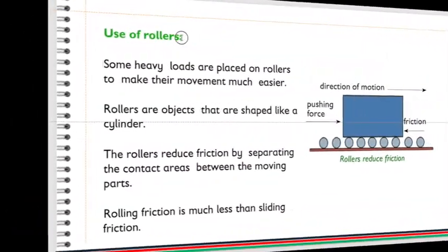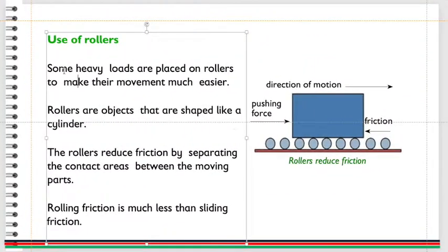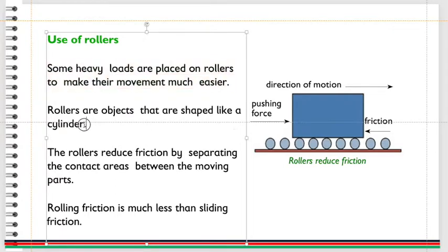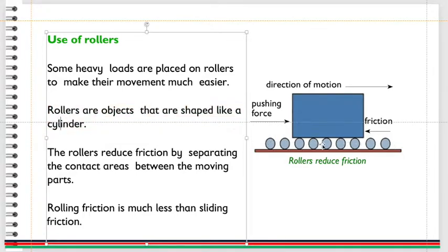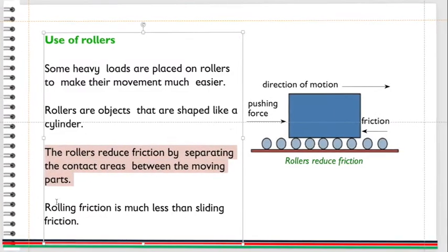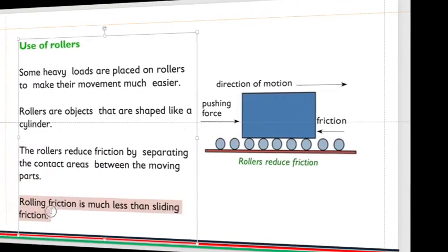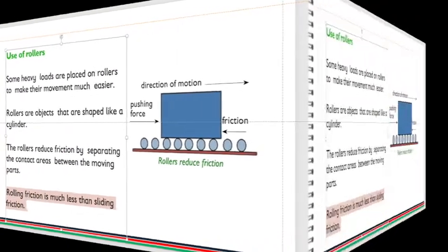Use of rollers. Some heavy loads are placed on rollers to make their movement much easier. Rollers are objects that are shaped like a cylinder. The rollers reduce friction by separating the contact areas between the moving parts. Rolling friction is much less than sliding friction.